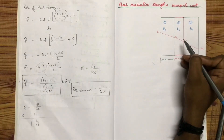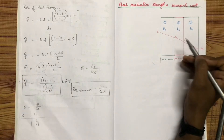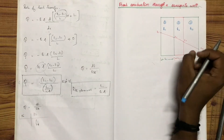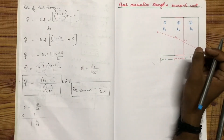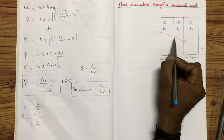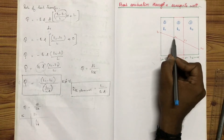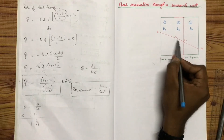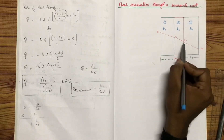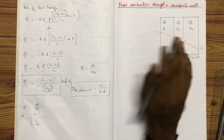then we have the area available for heat transfer. At the junction, the temperature becomes T2. And here we have T3. Then we have the relationship between T3 and T4.